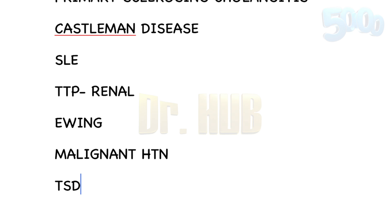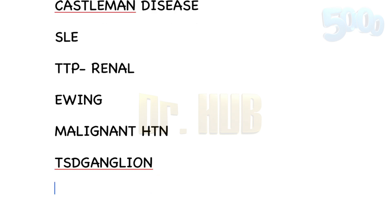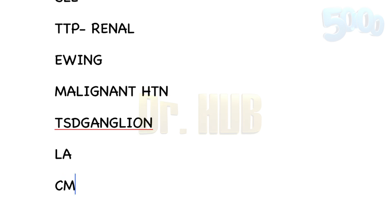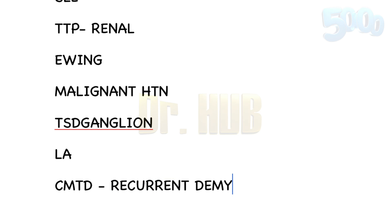Tay-Sachs disease involves arrangement of onion skin or cytoplasmic inclusions within the lysosomes of ganglion cells under the light microscope. Then comes Lyme's arthritis, showing onion skin appearance of the arterial wall. Finally, CIDP — chronic inflammatory demyelinating polyneuropathy — as well as Charcot-Marie-Tooth disease show onion bulb formation of proliferating Schwann cells around the axon, due to recurrent demyelination and remyelination.